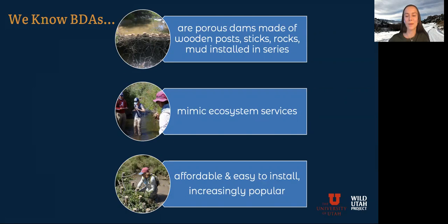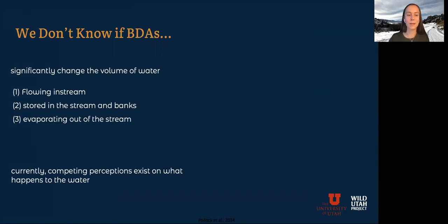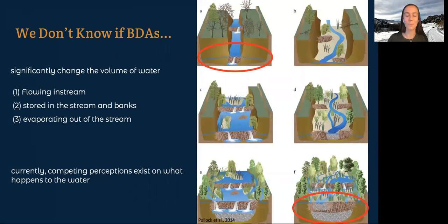Their implementation has sometimes outpaced the science around them, and so we have some questions that have been raised, especially about how they change the stream flow. What we don't know about BDAs is if they significantly change the volume of water that flows into the stream, which is really important for people downstream that have water rights. They could store water in the stream and in the banks of the stream, and they could change the amount of water that evaporates out of the stream. These unknowns have created competing perceptions about what happens to the water when we restore streams in this way, and one of my favorite illustrations of this is one of the very first conceptual models presented by Pollock et al in 2014 of beaver dam analogs and how they change stream morphology.